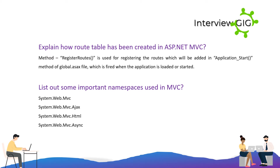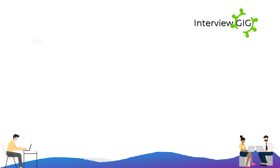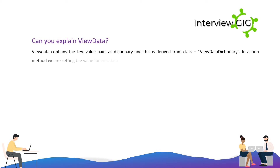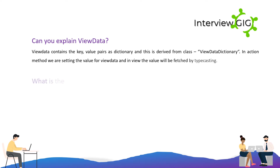System.Web.Mvc.Async. Can you explain ViewData? ViewData contains key-value pairs as a dictionary and is derived from the class ViewDataDictionary. In the action method we set the value for ViewData, and in the view the value will be fetched by typecasting.